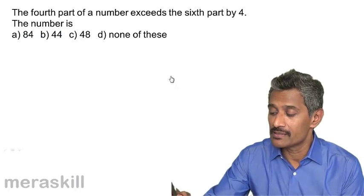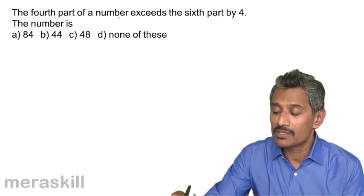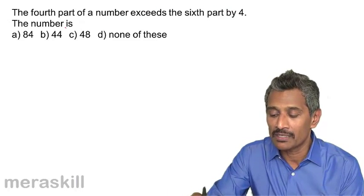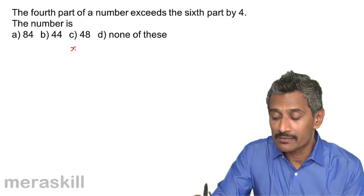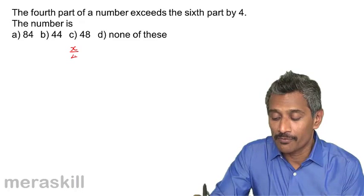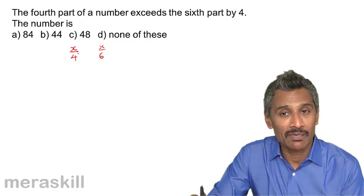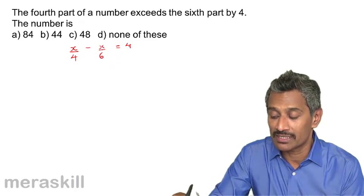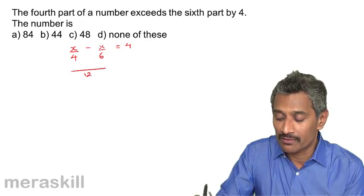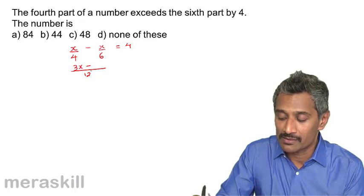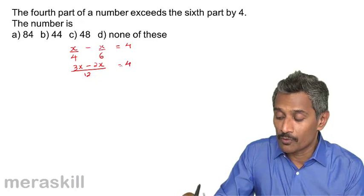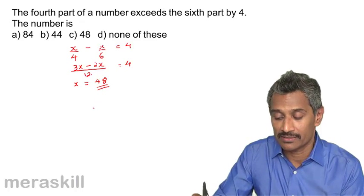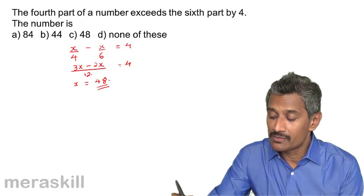Next: the fourth part of a number exceeds the sixth part by 4. Taking the number as x: x/4 minus x/6 equals 4. The LCM of 4 and 6 is 12: (3x minus 2x)/12 equals 4, giving x/12 equals 4, so x equals 48.